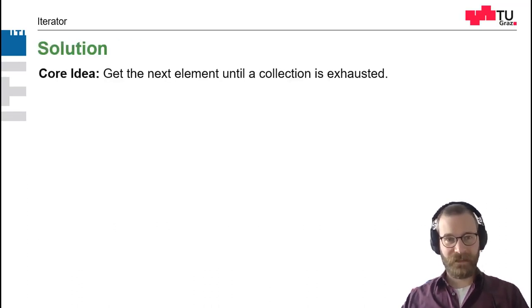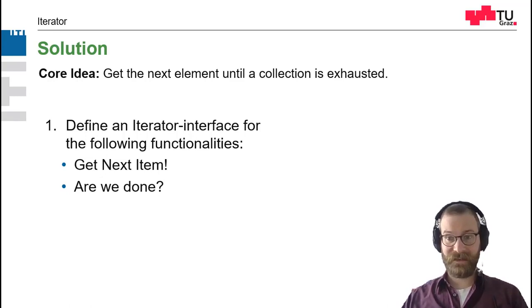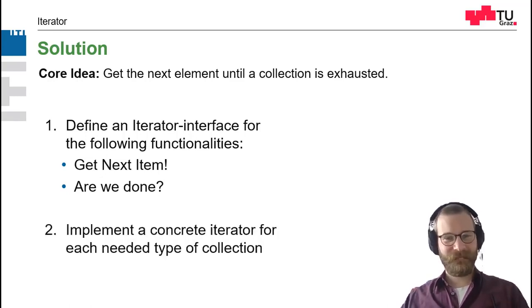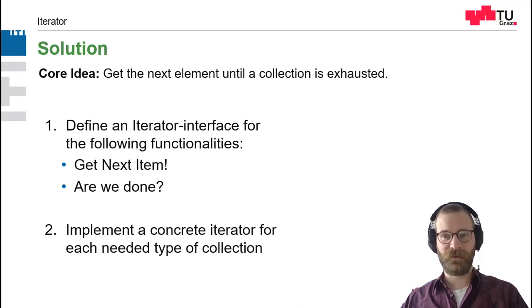The idea is: just get the next element until a collection is exhausted. What do we need for this? We need an interface which defines the two functionalities — get me the next item, and are we done yet? And in the end, we have to implement such an iterator for every type of collection: for a tree, for an array, and for a list, for example.